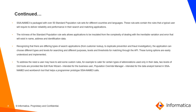The richness of the standard population rule set allows applications to be insulated from the complexity of dealing with inevitable variation and error in name, address, and identification data. Recognizing different types of search applications — from customer lookup to duplicate prevention and fraud investigation — the application can choose different types and levels of searching, and different purposes, levels, and thresholds for matching through the API.